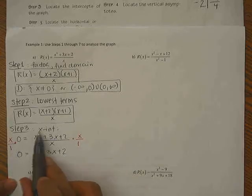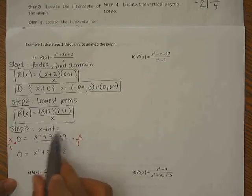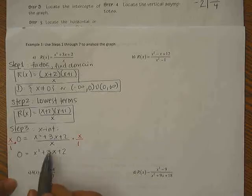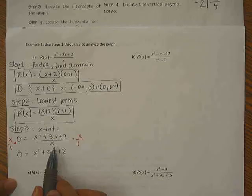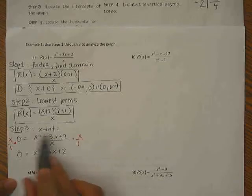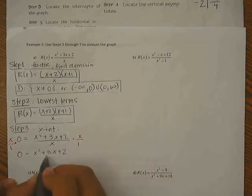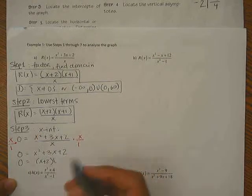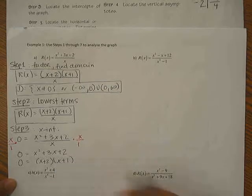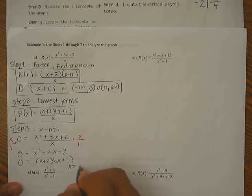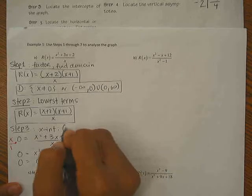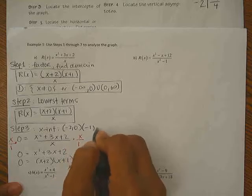Again, x intercept is the same as taking the numerator and setting it equal to 0. The denominator creates asymptotes or holes, so we don't need to worry about the denominator if we're looking for x intercept. And we already factored that, so let's write that again: x plus 2 times x plus 1 equals 0. I could have used this step right here, but I forgot. And you can use either one. So x intercepts are at negative 2 and negative 1. I'm going to write my final answer up here: negative 2 comma 0 and negative 1 comma 0.